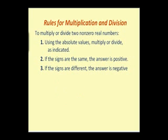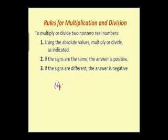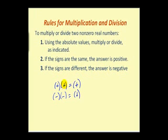Now let's discuss the general rules for both multiplication and division. The rules for multiplication and division of signed numbers are the same: if you're multiplying or dividing two numbers with the same sign — both positive or both negative — the answer is positive. If the two numbers have different signs, the answer is negative. So positive times positive is positive, negative times negative is positive, and if the signs are different, the answer is negative.